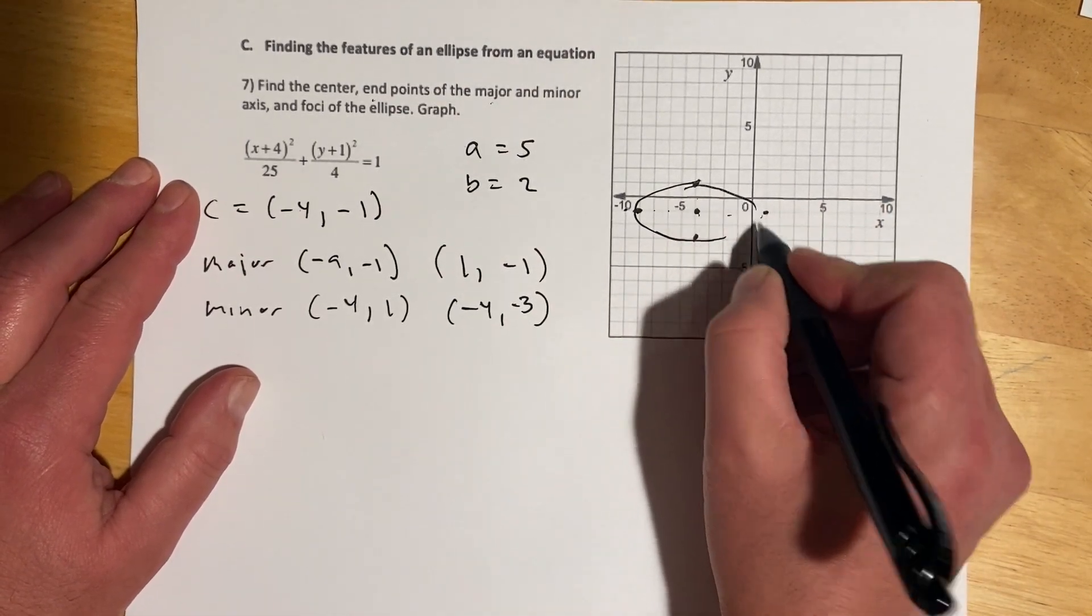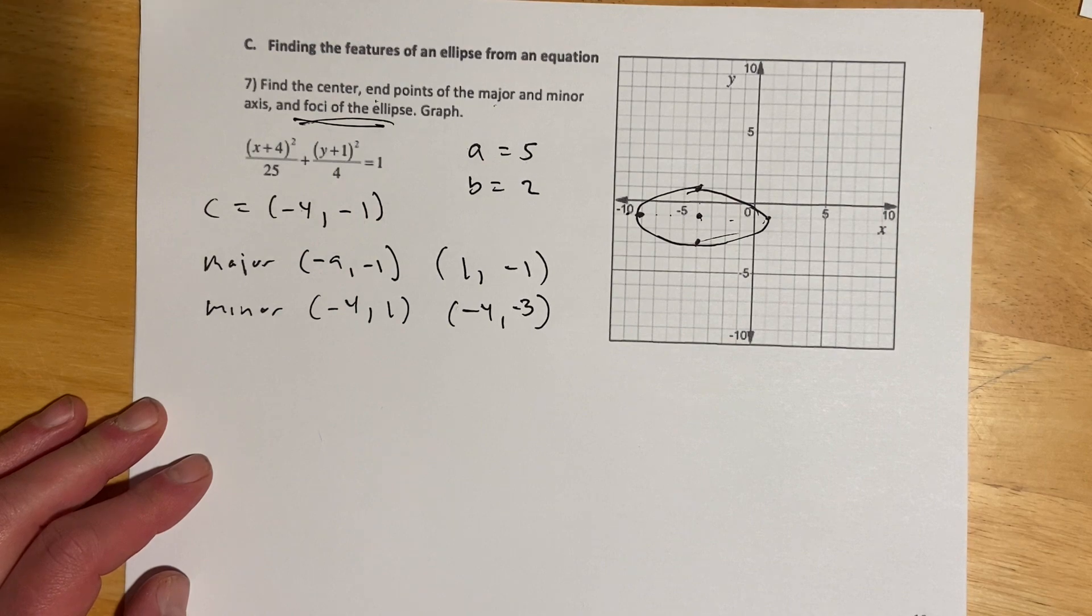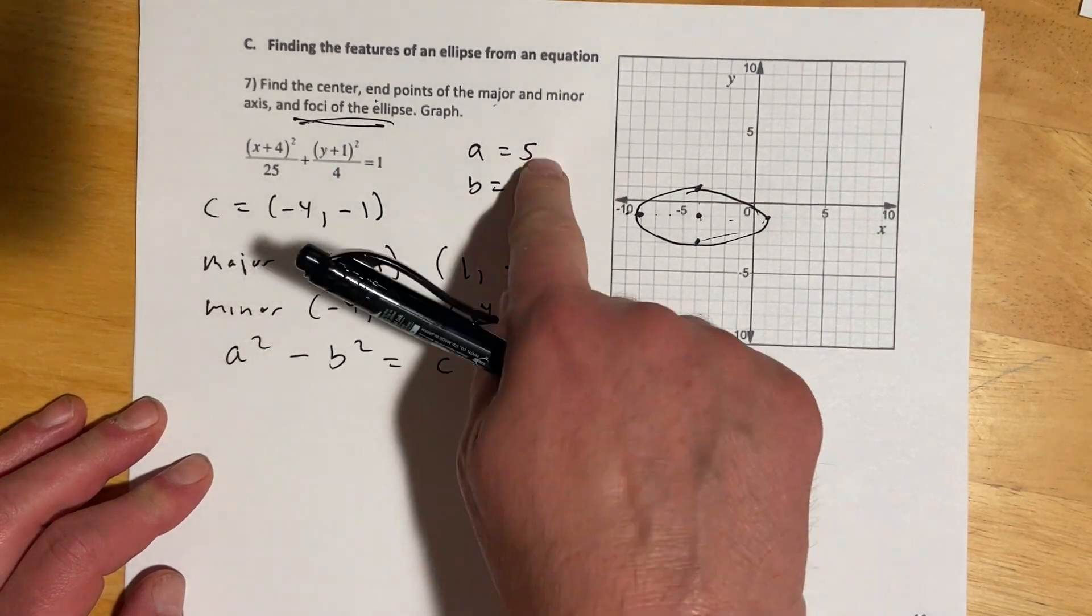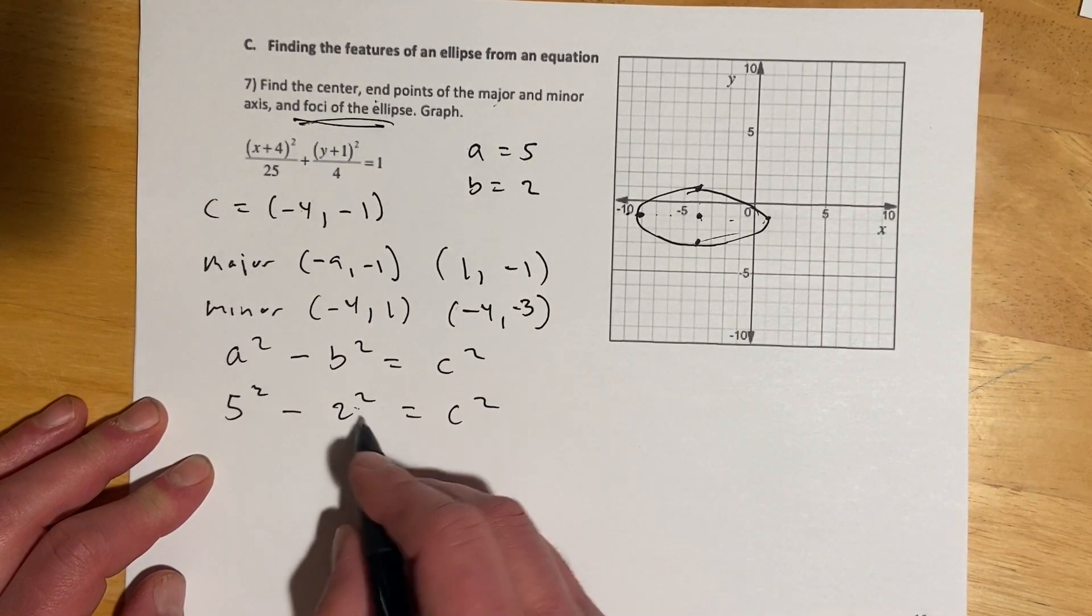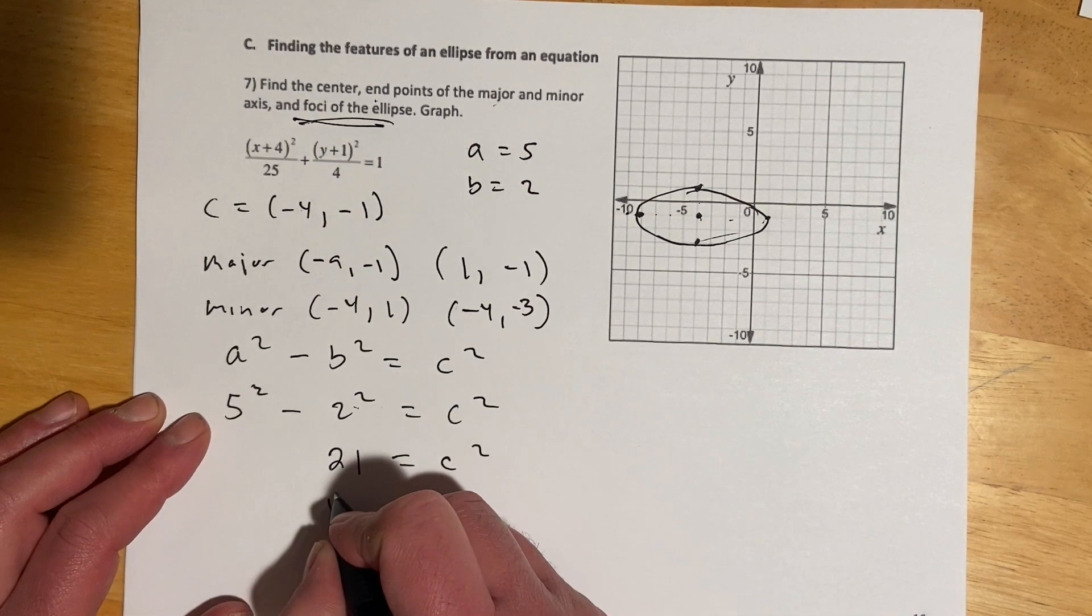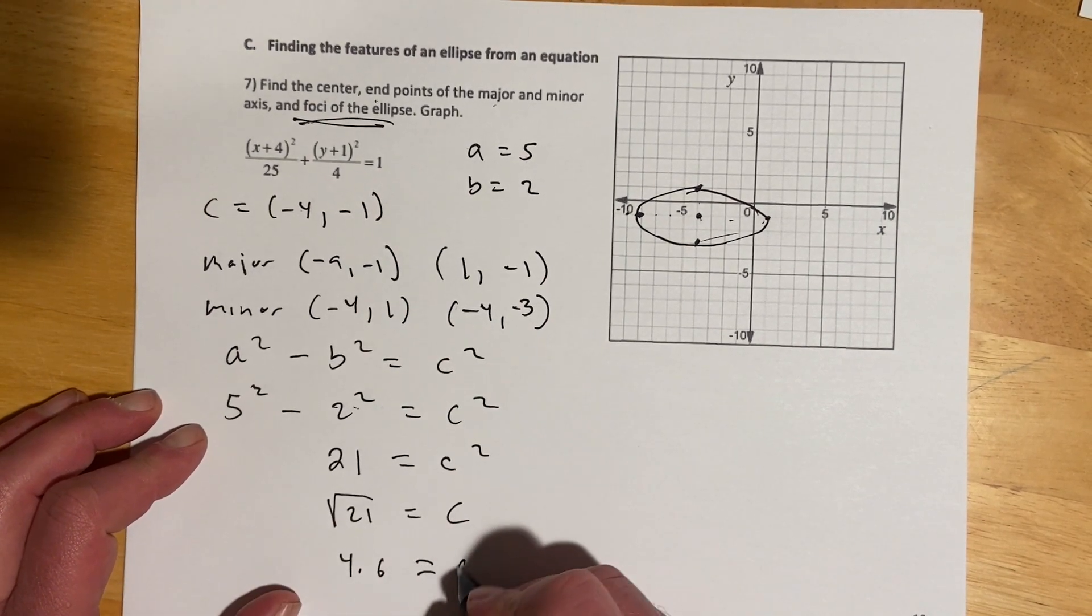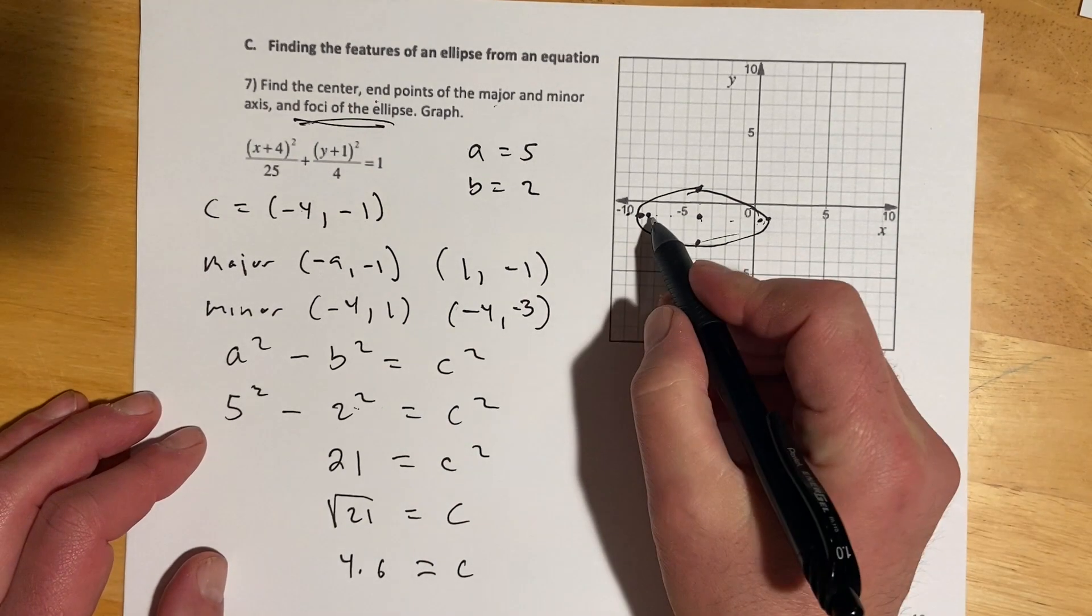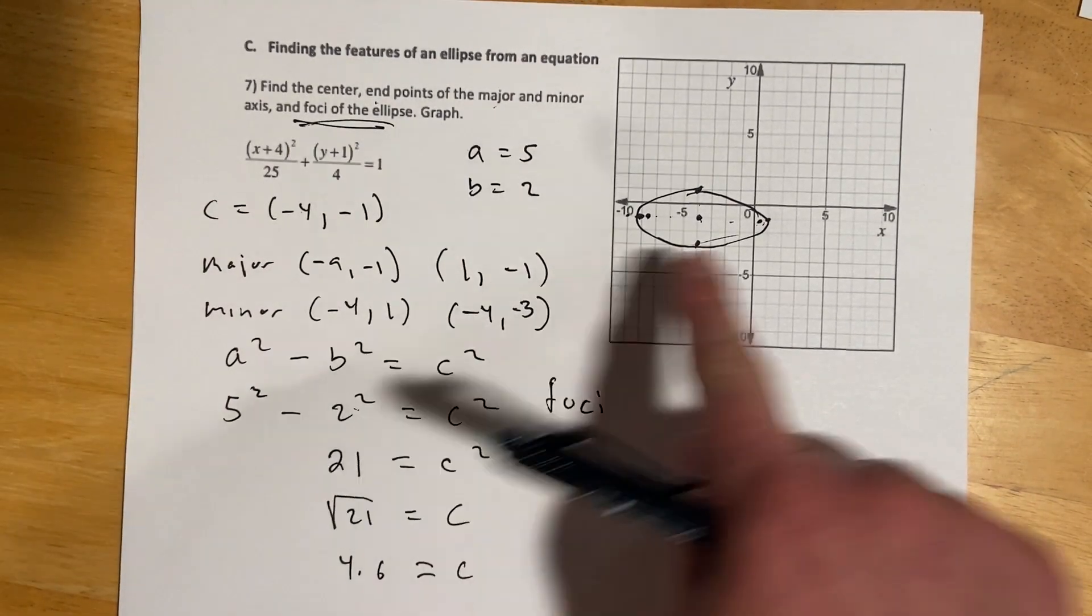So there would be our ellipse, and then the other thing it asked, and this is the trickier one, that's the foci. And so, to do that, we're going to need to find c. So, our relationship, again, was a squared minus b squared equals c squared. So, this is 5 squared minus 2 squared equals c squared. 5 squared minus 2 squared would be 21, because 25 minus 4 is c squared. And if I take the root of both sides, that gets me c. And if I cared to graph this, I could throw that in a calculator and figure out that c is about 4.6.